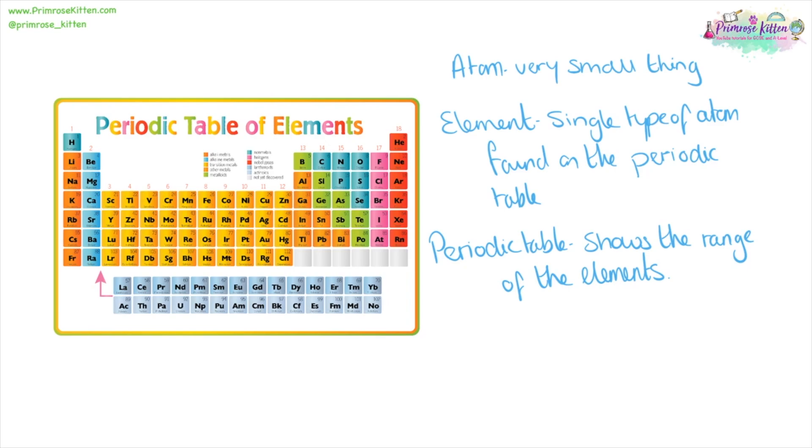Here we have our wonderful, beautiful periodic table. It is a list of all the elements which are known to exist. Elements are a single type of atom, and atom is a very, very small thing. The word atom is actually Greek for uncuttable. And when they named them they thought it was the smallest thing possible. The periodic table tells us loads of information about the elements, the range of elements that are known to exist. There are still loads yet to be discovered.